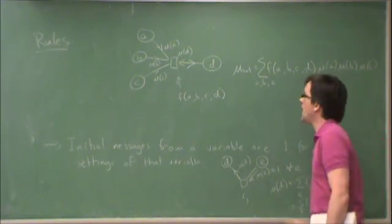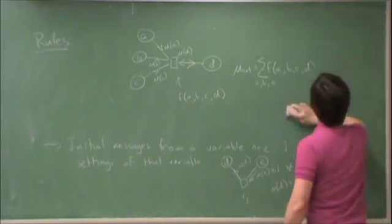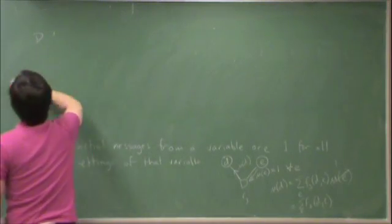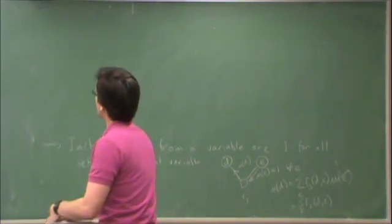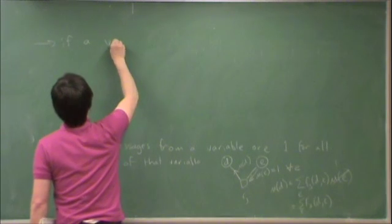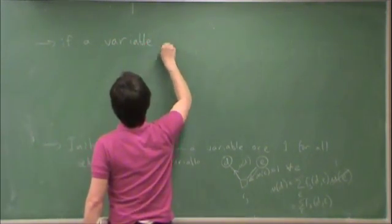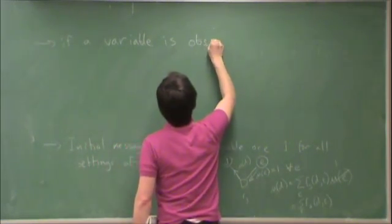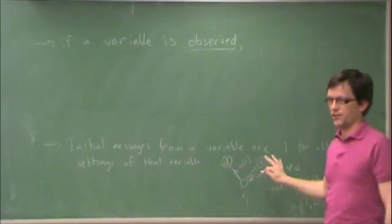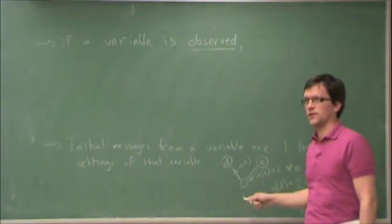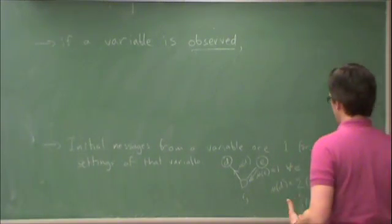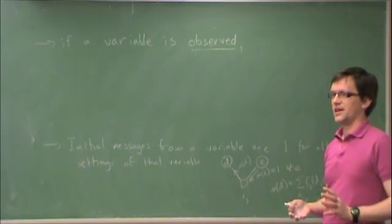One other rule. If a variable is observed. So the key thing about factor graphs is that all the variables within the factor graph are not observed. So this is like you have some hidden, obscure model that has all of these variables that you don't know the settings of.